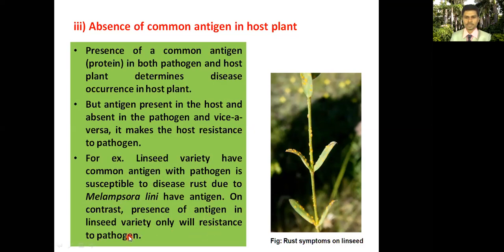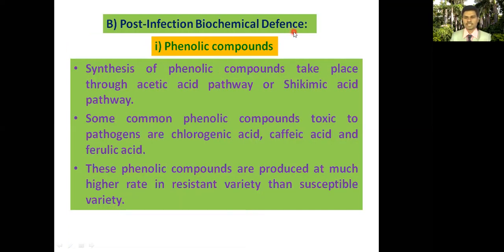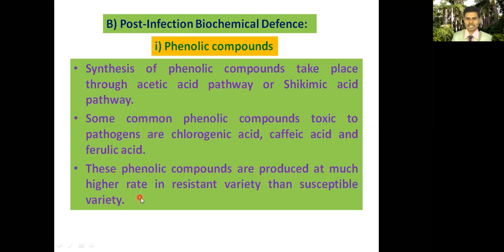Post-infection biochemical defense — biochemicals or metabolites produced by the host after pathogen infection. First: phenolic compounds. Synthesis of phenolic compounds takes place through the acetic acid pathway or shikimic acid pathway. Common phenolic compounds toxic to pathogens include chlorogenic acid, caffeic acid, and ferulic acid. These phenolic compounds are produced at a much higher rate in resistant varieties than in susceptible varieties, and disease resistance of some varieties is due to the presence of these phenolic compounds.